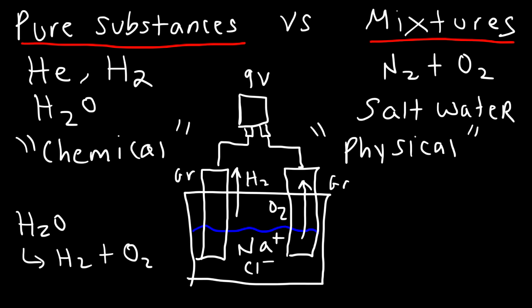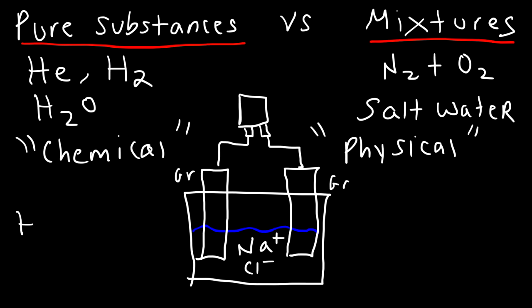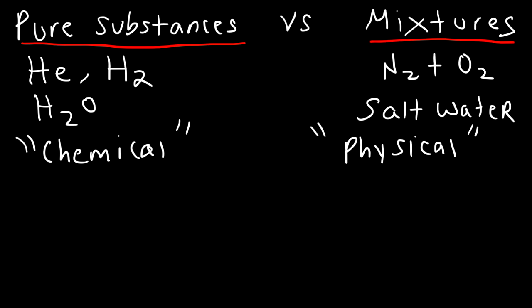To summarize: you can use a physical process to separate the components of a mixture, while a chemical process breaks down a pure substance into simpler elements. For salt water, adding heat boils off the water and the salt remains — that's a physical process. Now let's classify some examples as pure substance or mixture, starting with carbon dioxide — dry ice, CO2.